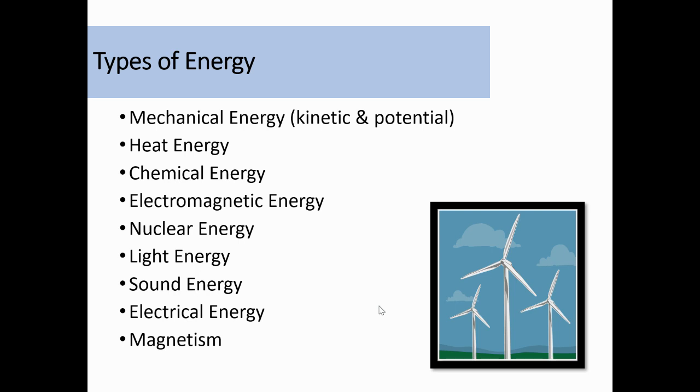Of course, we have heat energy, chemical energy, electromagnetic energy, nuclear energy, light energy, sound energy, electrical energy, and of course, we can never forget magnets. So these are all the different types.